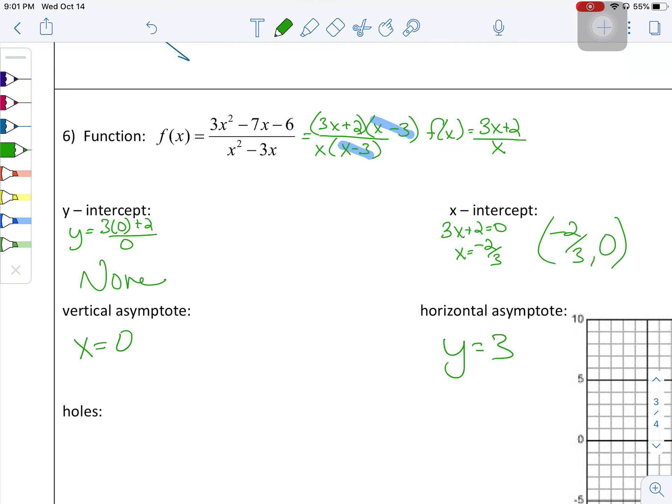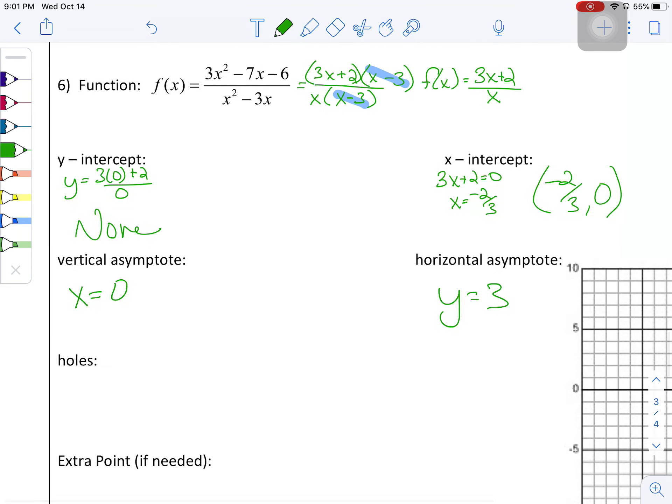We clearly have a hole in this graph because we have something that we canceled. So x minus three equals zero, that's the factor I canceled out, which gives me x equals three. And now I'm going to take that three and put it into the simplified function to figure out what y is equal to. So three times three plus two over three is nine plus two makes eleven over three.